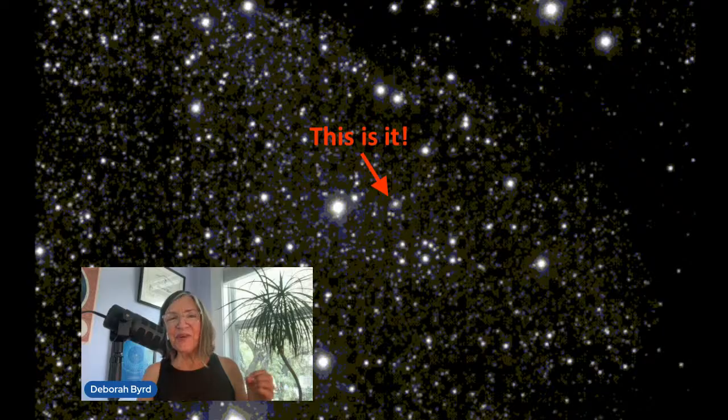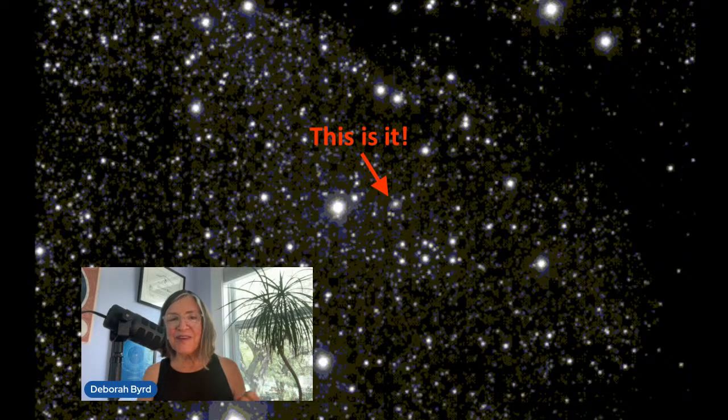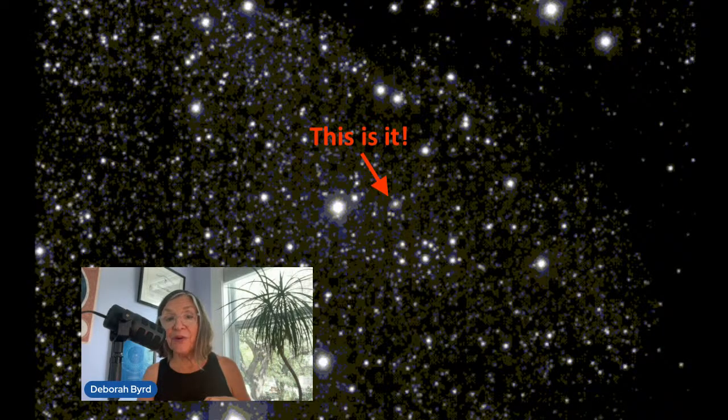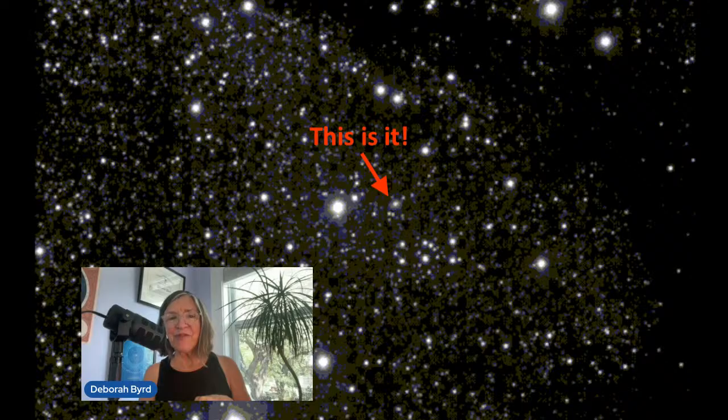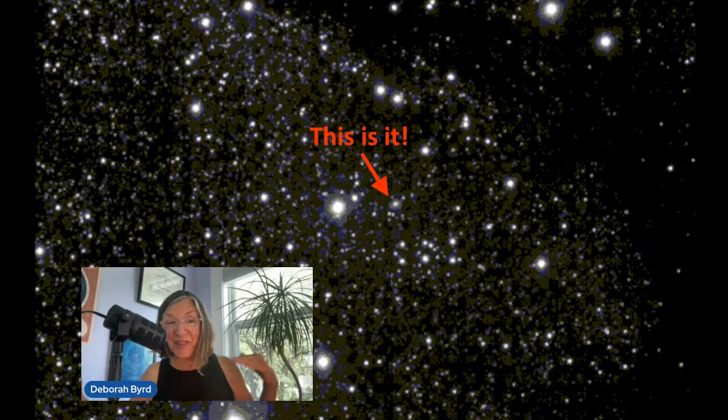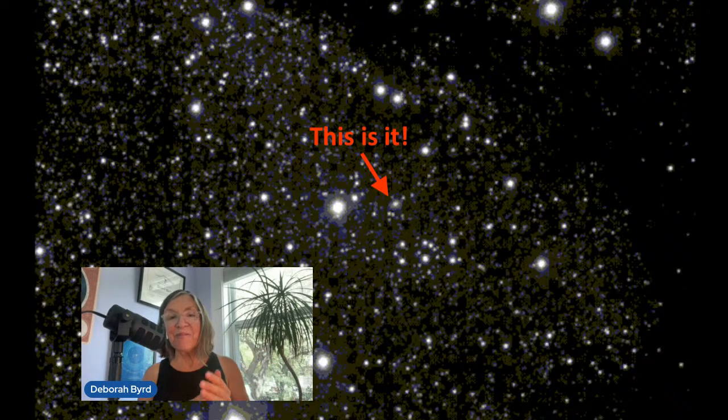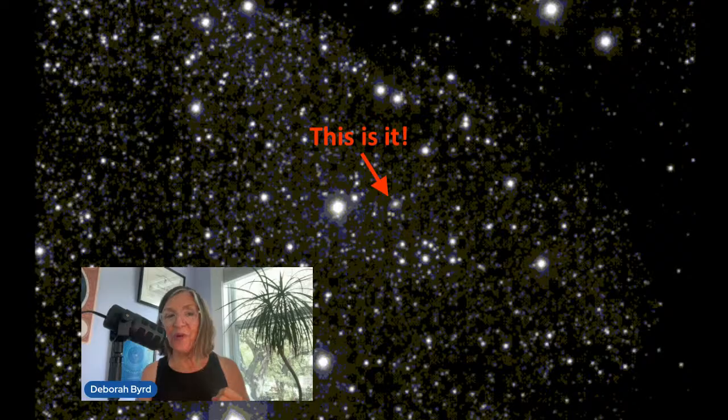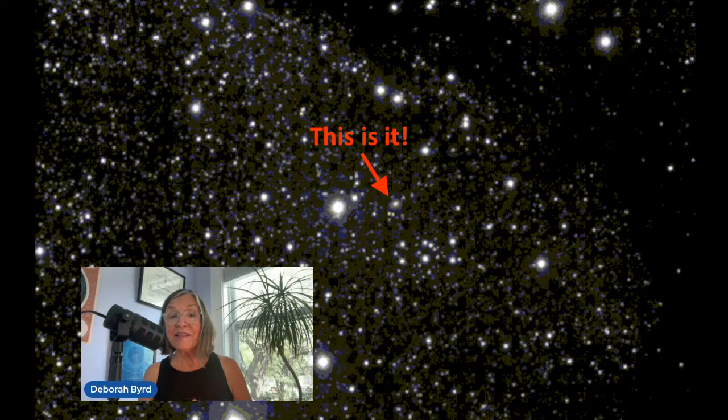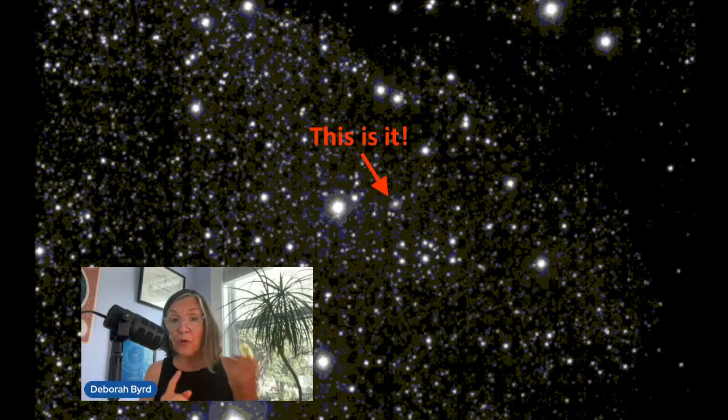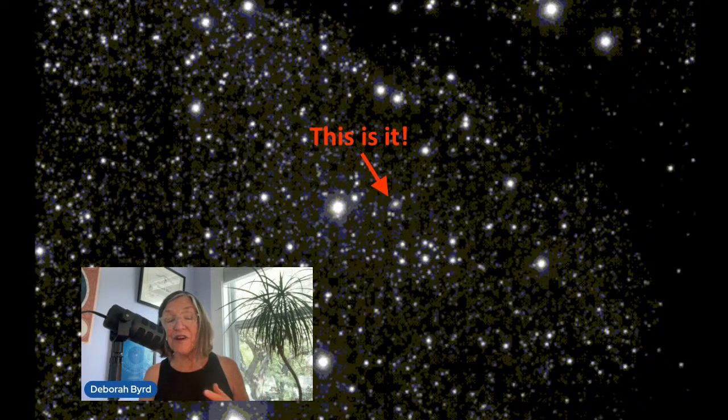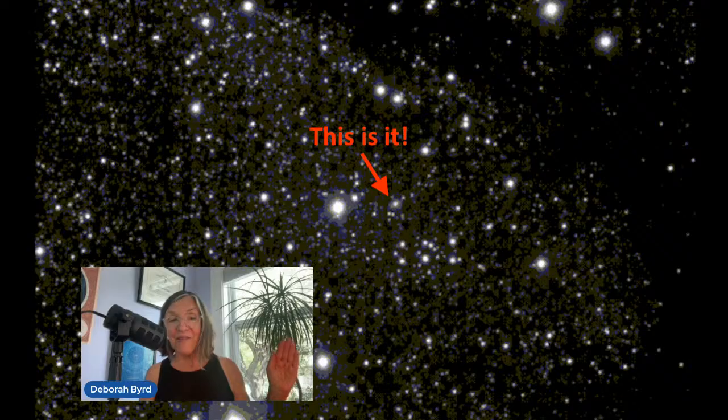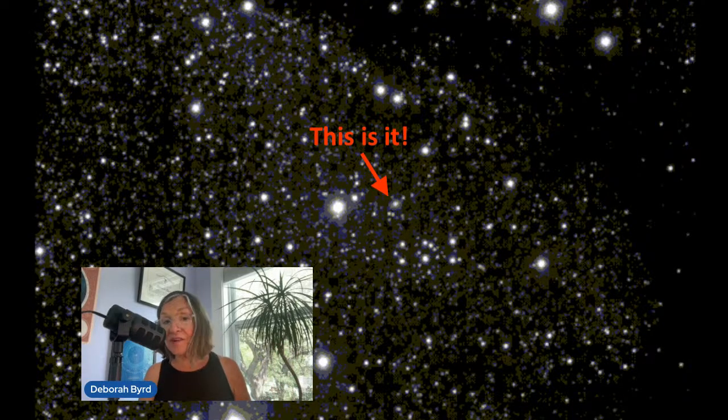Big news earlier this month when astronomers announced they'd spotted another interstellar object. That's an object from another star system caught moving within our own solar system. It's only the third one ever discovered, and in just two short weeks since that July 1st discovery, astronomers have learned that this star traveler might be the oldest comet we've ever seen.